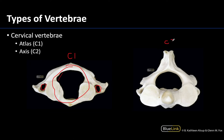C2 is a very robust vertebra. It will have a spinous process and a body, but it does have this very distinct projection — a superiorly facing projection referred to as the dens, sometimes called the odontoid process. This dens projects into the C1 region in order to allow for rotation to occur between C1 and C2.